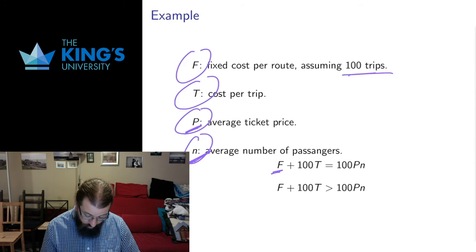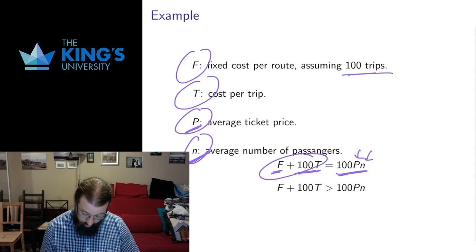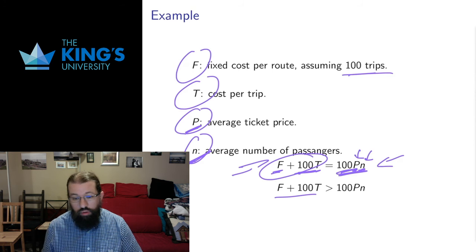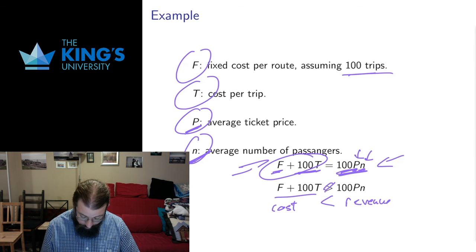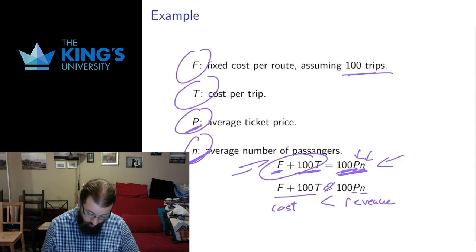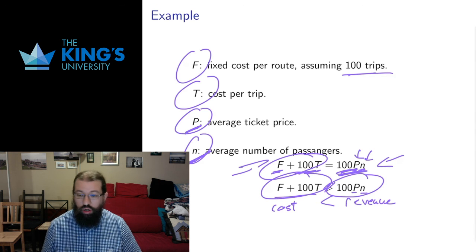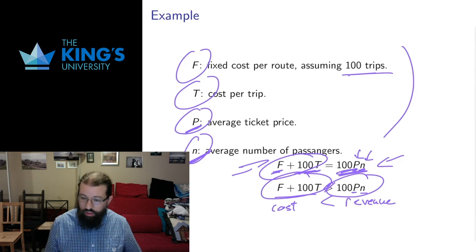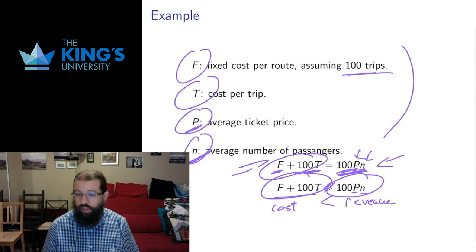The cost is the fixed cost plus the cost per trip times 100. The revenue is the number of passengers n times the ticket price p, times the number of trips. If you want to break even, you set cost equal to revenue — but typically as a company you want revenue to exceed costs, so I want my costs to be less than my revenue. So I'm solving an inequality: what do I need p to be, what do I need n to be, in order that revenue from selling tickets exceeds the cost of running the operation? You can see how assumptions go into this — costs, ticket prices, number of passengers — and I turn it into an equation or inequality that I can solve to decide whether this is profitable for the airline company.